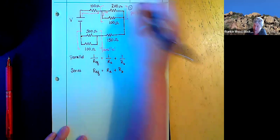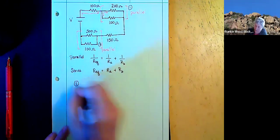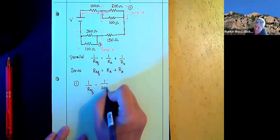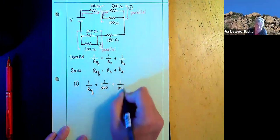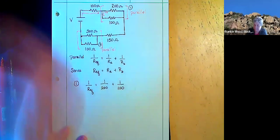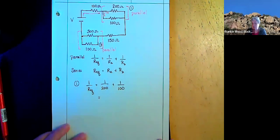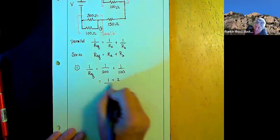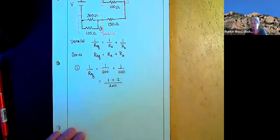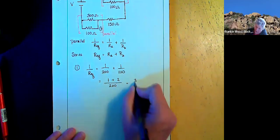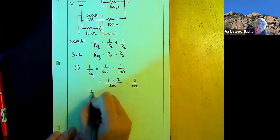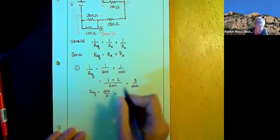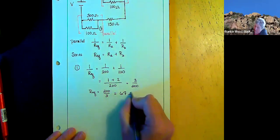So we're going to do this as number one. One over REQ is going to equal one over 200 plus one over 100. I'm going to use a common denominator. I get one plus two over 200, which gives me three over 200, which means my REQ is going to be 200 divided by three. And that ends up being about 67 ohms.